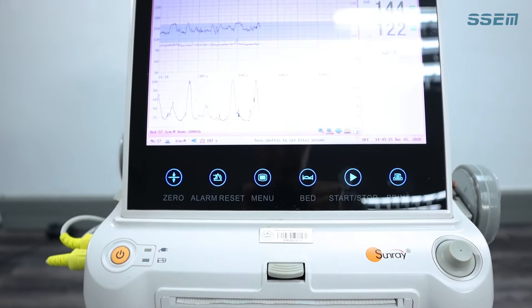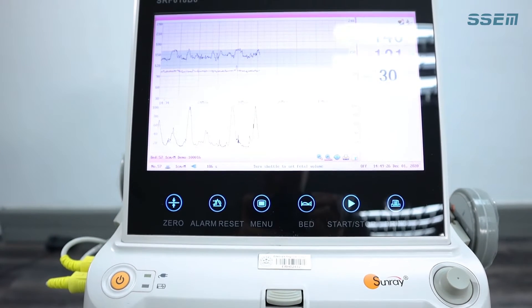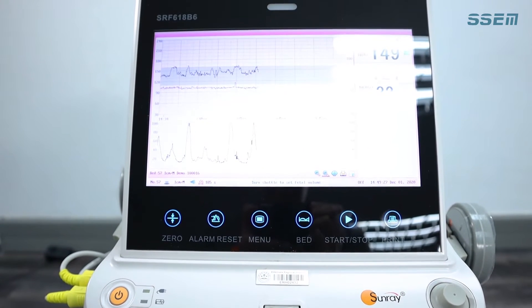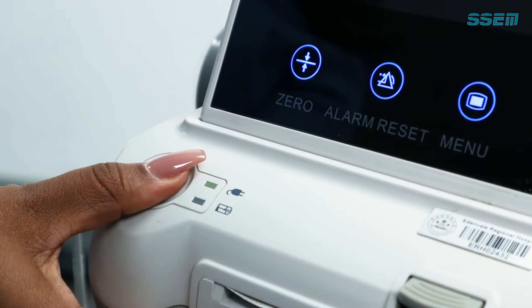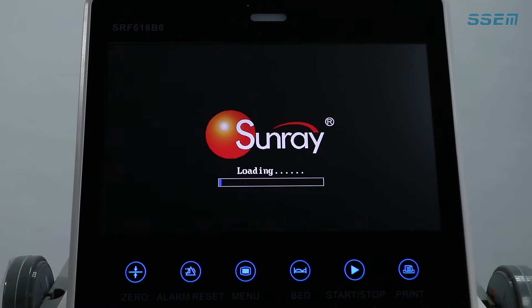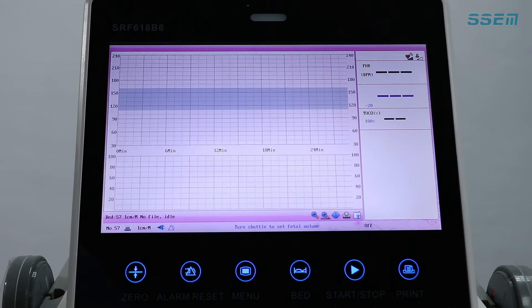The sequence to follow when doing a Cardiotocograph on a Sunray B6 device is as follows. Switch on the device. Note that the device will perform a self-test. Once passed, the main screen will display.